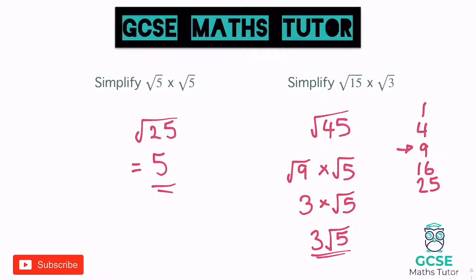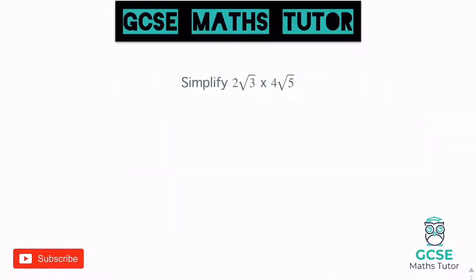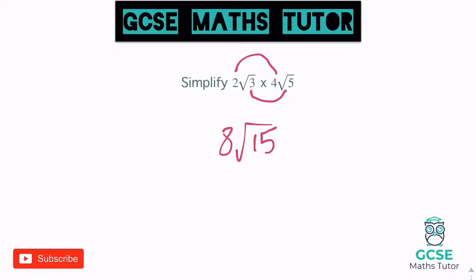Although it's quite nice and simple to multiply these, you do still need to be aware of whether the answer can be simplified. Now slightly different questions — we've got numbers in front of the roots. When multiplying surds like this, the numbers at the front multiply numbers at the front, and the surd part multiplies the surd part. So 2 times 4 is 8, and √3 times √5 is √15. A quick check — does √15 simplify? 1, 4, 9 — none of those go into 15, so the answer is 8√15.